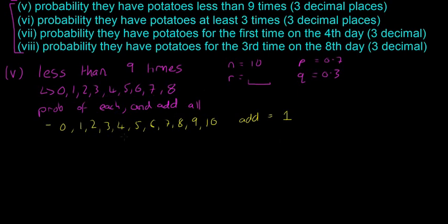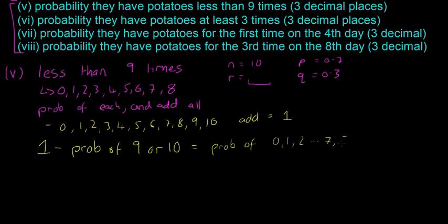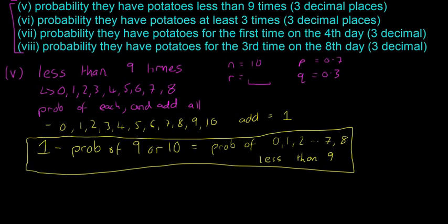We can use that to make this question easier. Because all probabilities add up to 1, we can say: 1 minus P(9 or 10) equals P(0, 1, 2, ... 7, 8), which is the probability of less than 9. This is a really important case to remember, and part six uses the same method. One minus the probability of something equals the probability of everything else — it's a very handy trick.